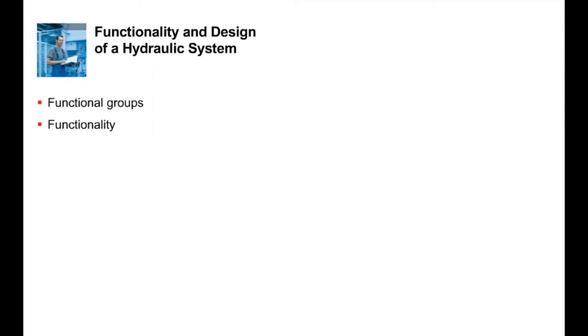The following learning objectives are to be achieved with this learning module. You should be able to explain the basic functional groups of a hydraulic system and their functions, explain the basic functionality of a hydraulic system, and name and identify the important components of each functional group. You should be able to explain the basic functions of directional control valves, flow control valves, pressure relief valves, check valves, hydraulic pumps, and hydraulic cylinders.